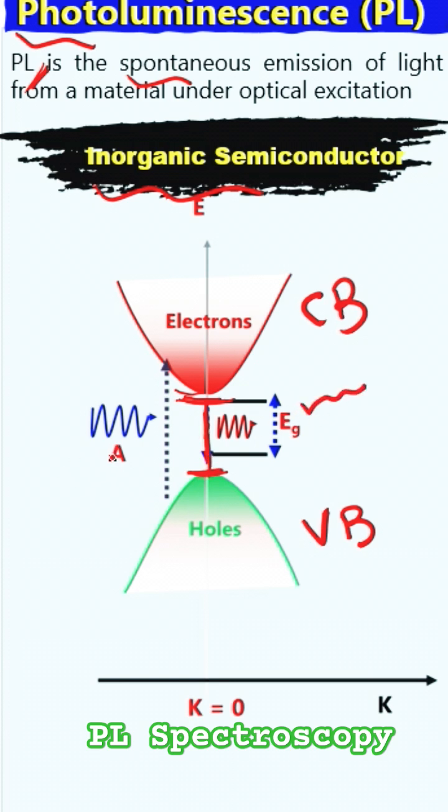Now when we want to shine light, when we want to bombard light, the energy of this photon must be greater than the band gap. This means that the energy of the photon must be greater than the band gap in order to take the electrons from here and take it to the conduction band. Otherwise the absorbance will not occur and there will be no emission, there will be no photoluminescence.